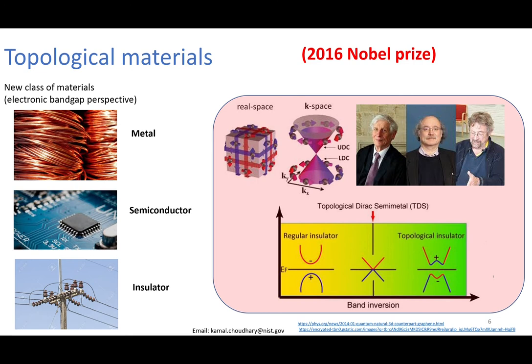So when I say topological materials, I'll give a brief background. Based on the band gap, materials can be classified into metal, semiconductor, and insulator. However, recently, it was proposed that there can be a topological phase. For example, in bismuth selenide, there can be both conducting as well as insulating phases. So the surface can be conducting but the bulk can be insulating.